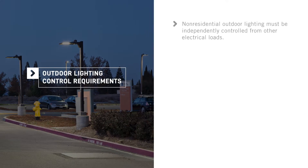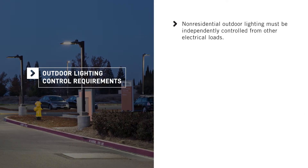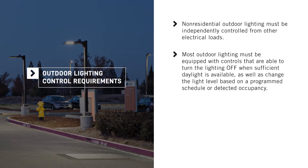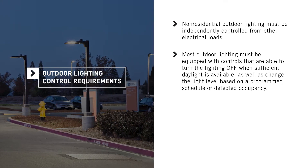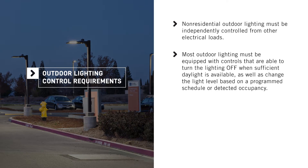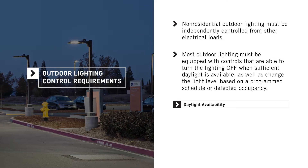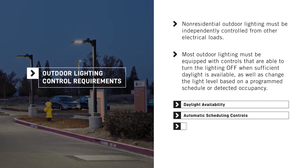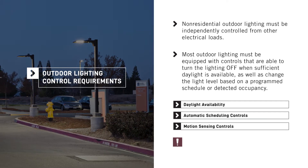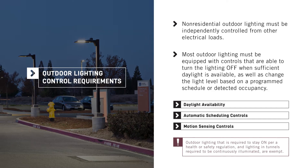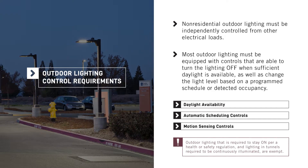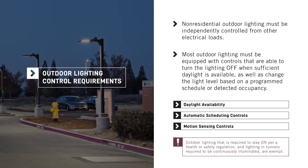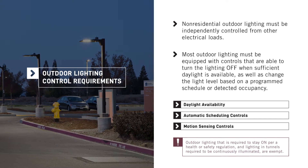The Energy Code requires that non-residential outdoor lighting be independently controlled from other electrical loads, and that most outdoor lighting be equipped with controls that are able to turn the lighting off when sufficient daylight is available, as well as change the light level based on a programmed schedule or detected occupancy. Exceptions include outdoor lighting required to stay on per a health or safety regulation, and lighting in tunnels required to be continuously illuminated.